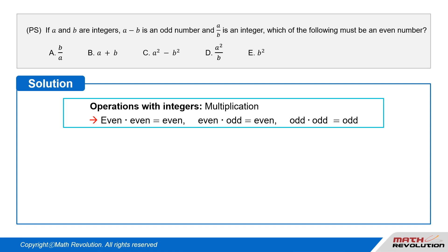Even times even equals even. Even times odd equals even. And odd times odd equals odd.